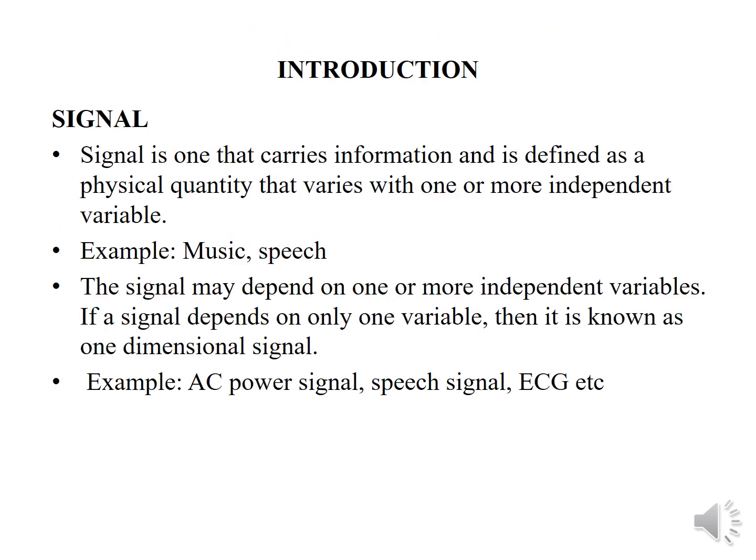What is a signal? A signal is one that carries information and is defined as a physical variable quantity that varies with one or more independent variables. For example, music and speech signals. The signal may depend on one or more independent variables, and if the signal depends on only one variable, it is said to be a one-dimensional signal.